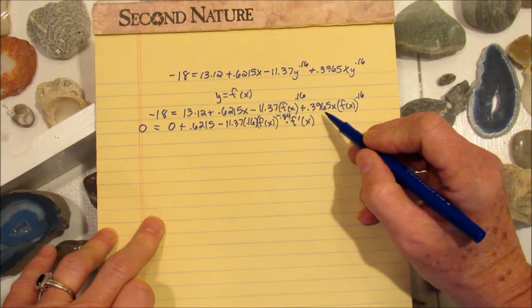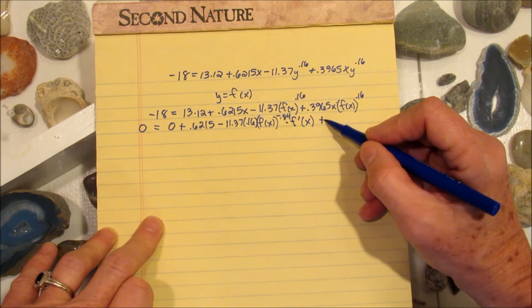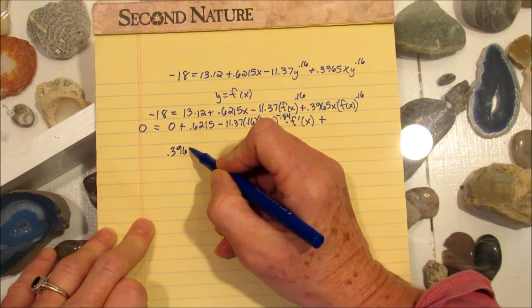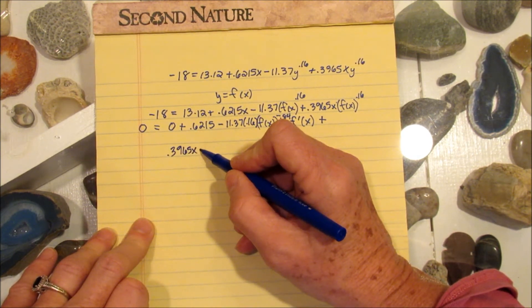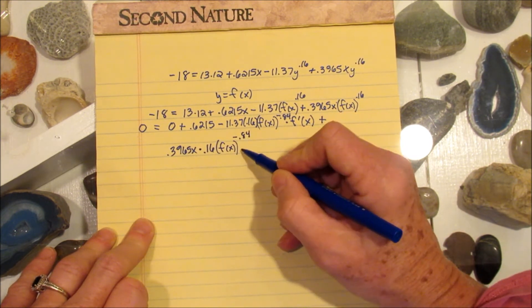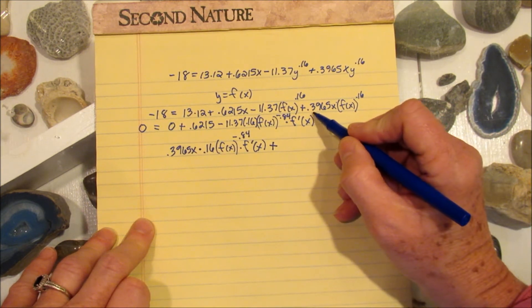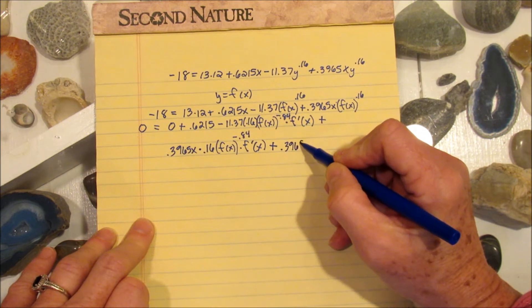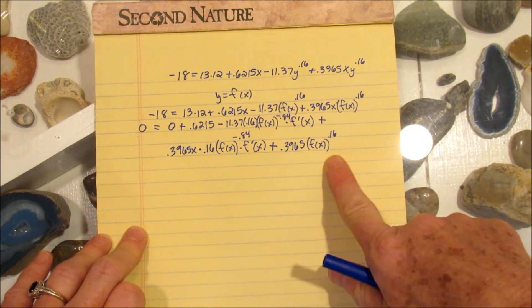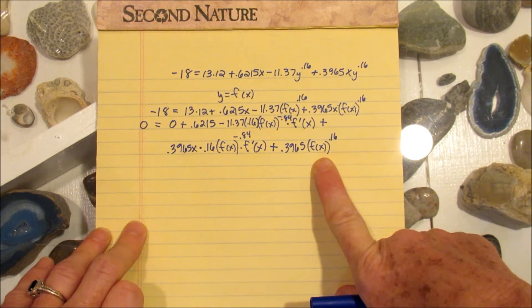Now this next term is a product. I have 0.3965x times f of x to the 0.16, so I need to follow the product rule. The derivative of a product says you leave one function alone, so 0.3965 times x is going to get left alone, and then I multiply by the derivative of the other function. So I'm going to multiply by 0.16 times f of x to the negative 0.84, then the chain rule says take the derivative of the inside function. Then completing the product rule, I then take the derivative of the 0.3965x, which is going to be 0.3965, and then I leave the other function alone. So I have first times derivative of the second, plus the second times derivative of the first.